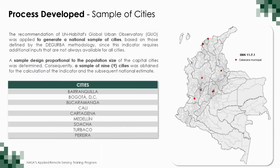As a preliminary activity, Eurostat recommends generating national samples of cities based on those defined by the European methodology, taking into account that the indicator requires additional inputs not always available for all cities. In DANE, we designed a sample proportional to the population size of the capital cities. As a result, we designed a sample of nine cities in which we calculate indicator 11.7.1.